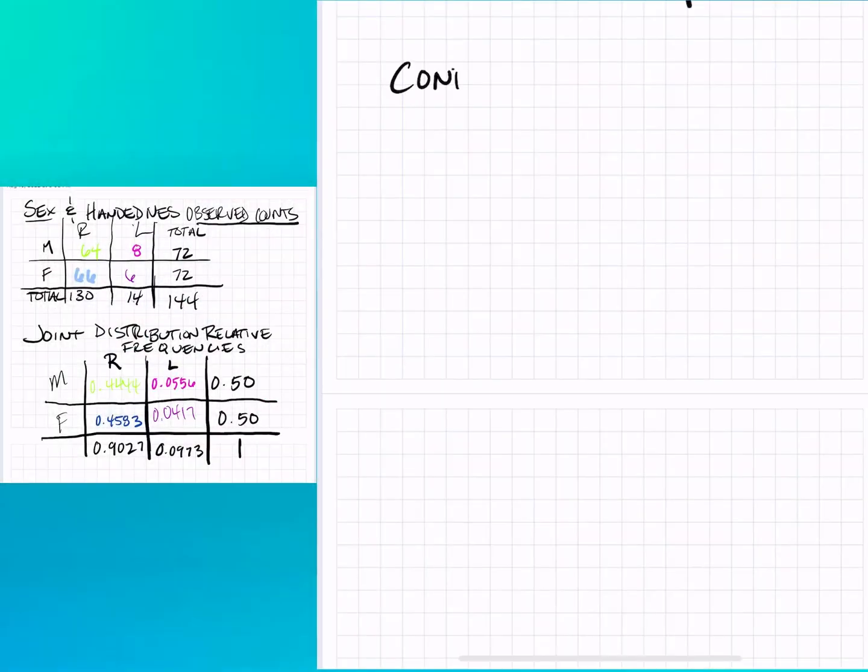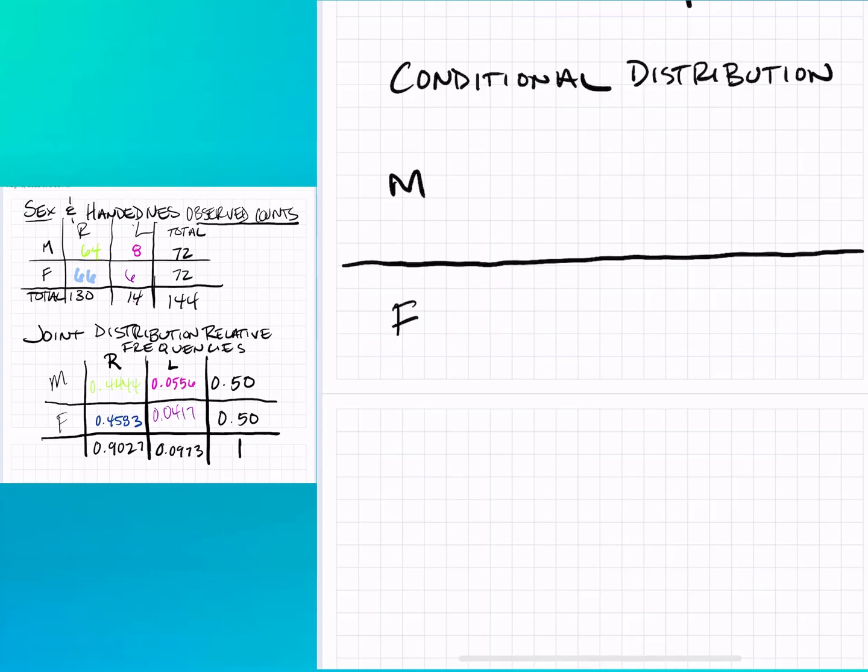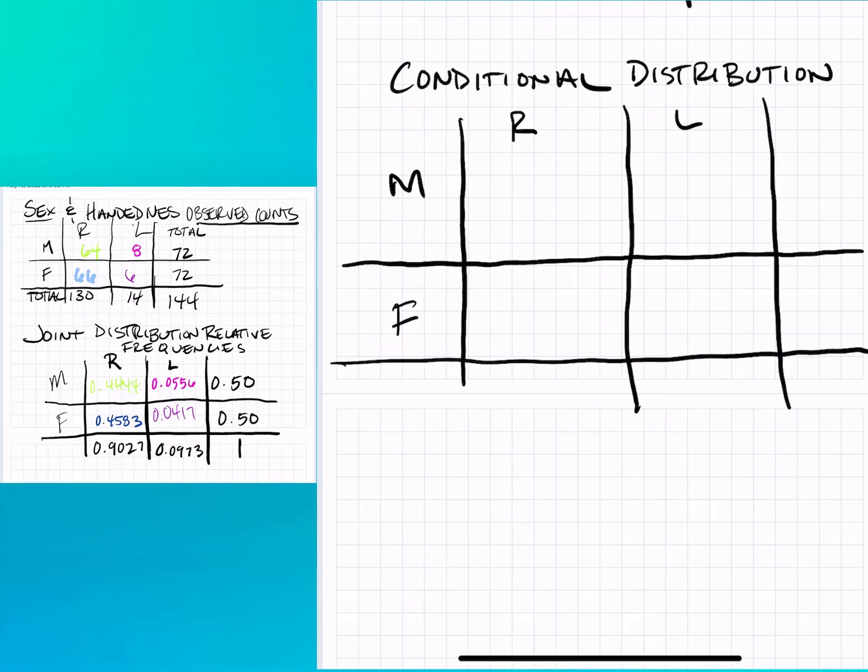Welcome back, thank you for clicking on today's video. Today we're going to be talking about the conditional distribution for a contingency table. It's called conditional because we're going to put a condition on it. Here we're going to be making our condition the sex of the cell, and so we will be using instead of the total for the table, we'll be using the total for the row.